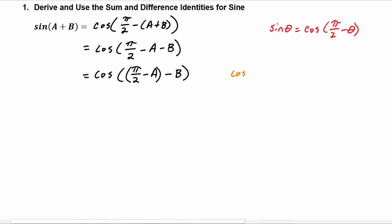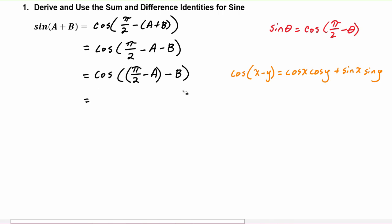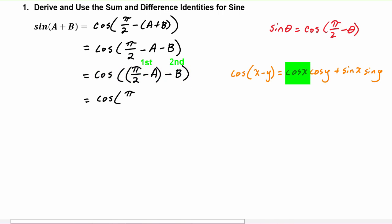So for cosine of x minus y, we know that equals cosine x cosine y plus sine x sine y. Applying that here, where (pi over two minus a) acts like x and b acts like y — cosine of the first times cosine of the second, plus sine of the first times sine of the second — this expression turns into cosine of (pi over two minus a) times cosine of b.